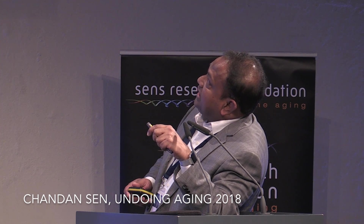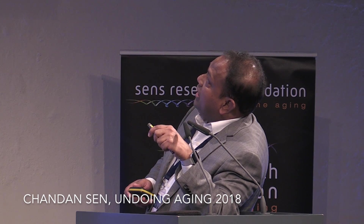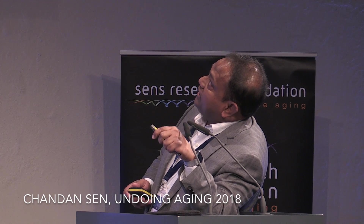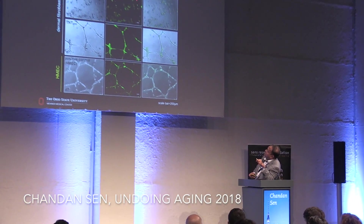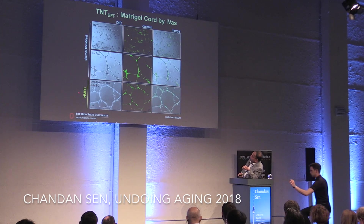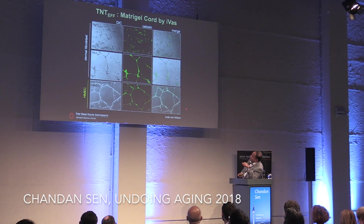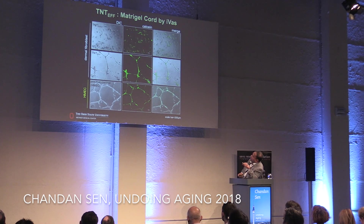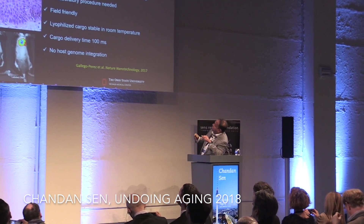Using the EFF vector on dermal fibroblasts, the spindle-shaped fibroblasts assume a cobblestone morphology like endothelial cells. Over seven days, they shed the fibroblast marker FSP1 and acquire PECAM1. In a Matrigel assay, untreated fibroblasts form no angiogenic cords, but after TNT-EFF treatment they form cords similar to human microvascular endothelial cells.